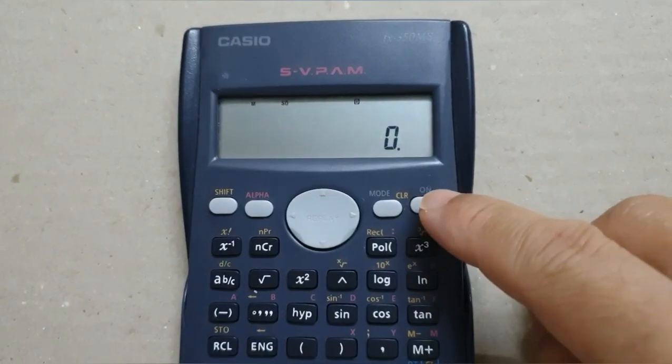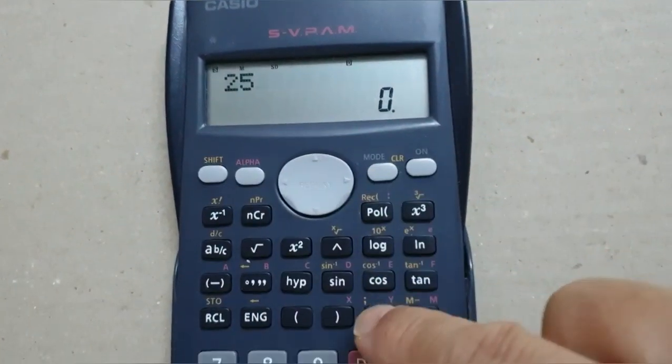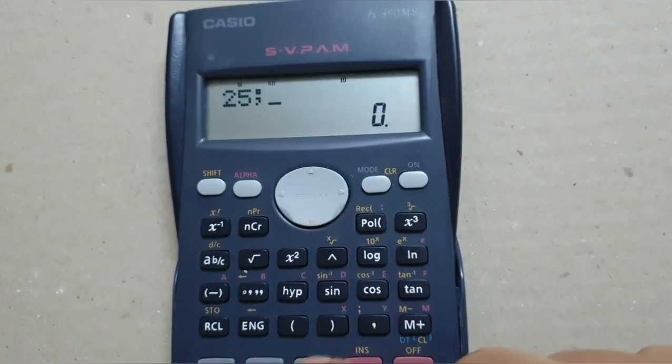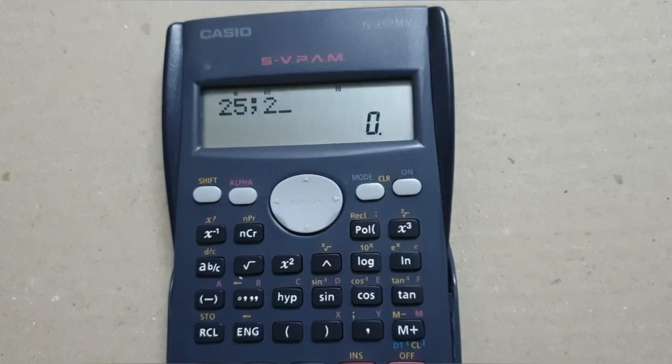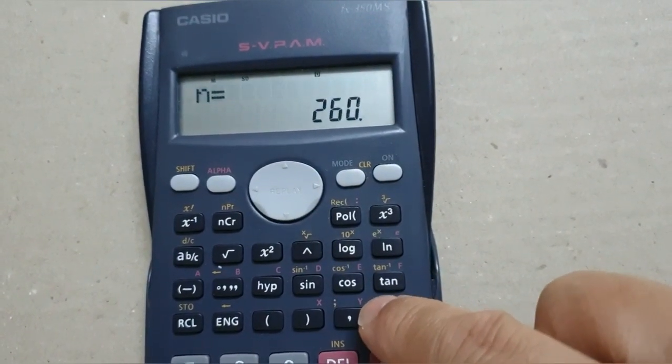Enter values. The first value is 25. Shift comma is semicolon. After that, frequency is 260. M plus data entry.